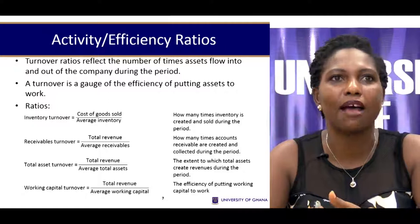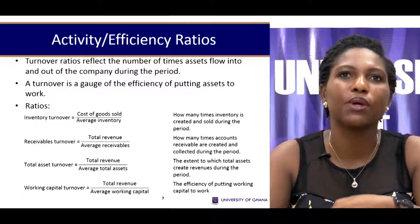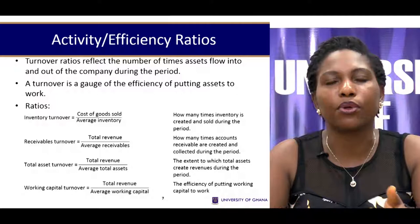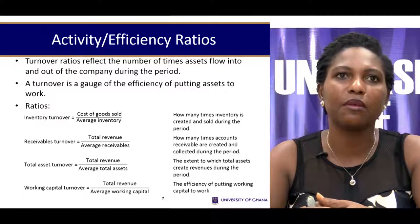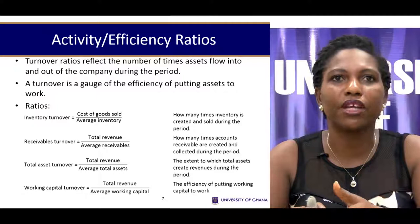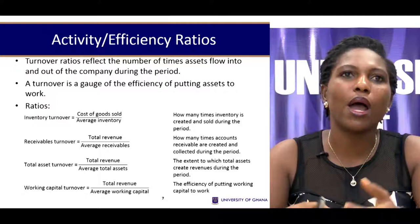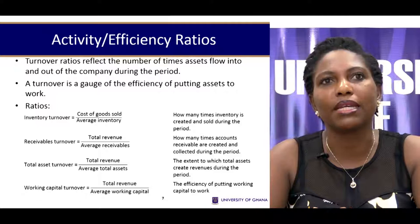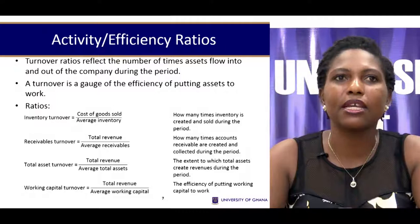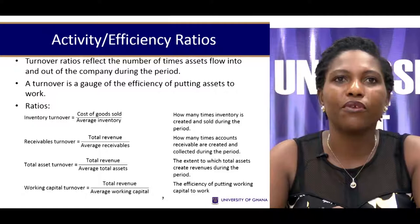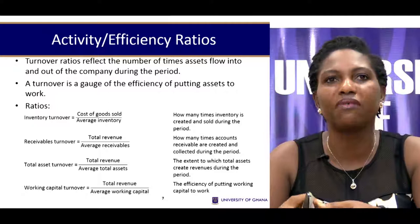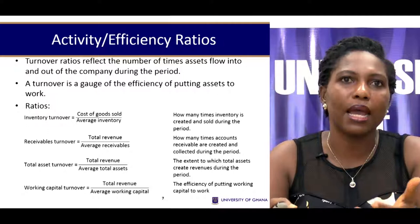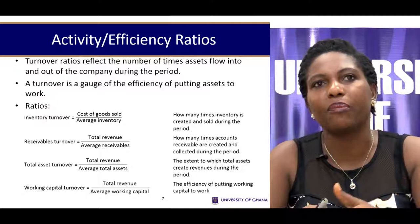Dividing the number of days in a year by the inventory turnover ratio gives the inventory holding period — how long inventory stays in the warehouse before being sold. The shorter this period, the better, as it means less capital is tied up in inventory and less opportunity for obsolescence and spoilage, especially for perishable goods. The same principle applies to receivables turnover, measuring how quickly debtors are collected, reducing bad debt risk.